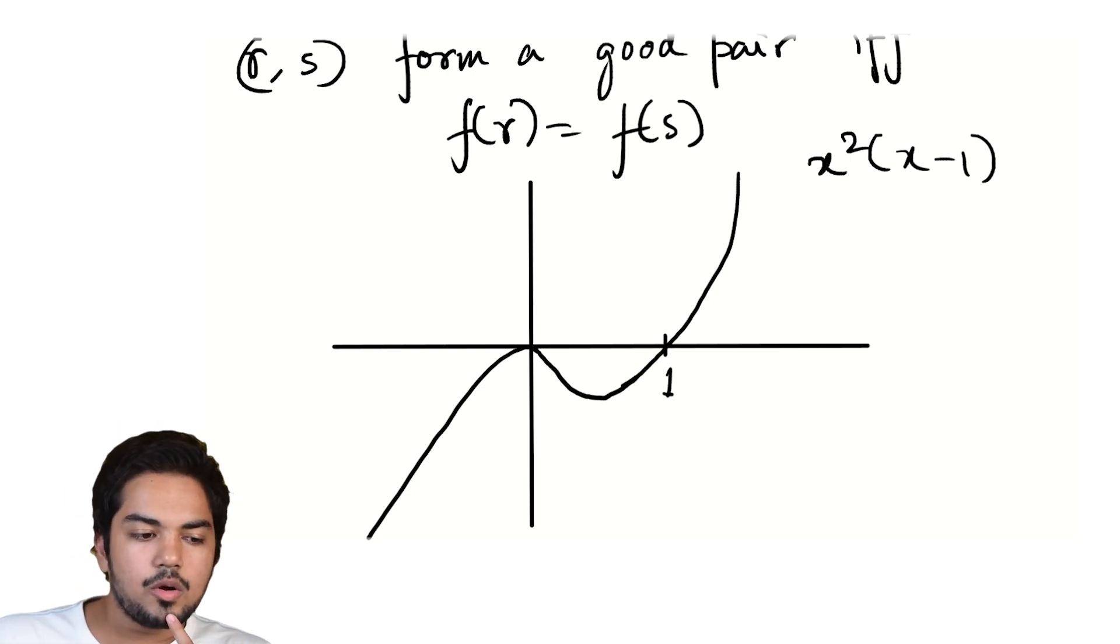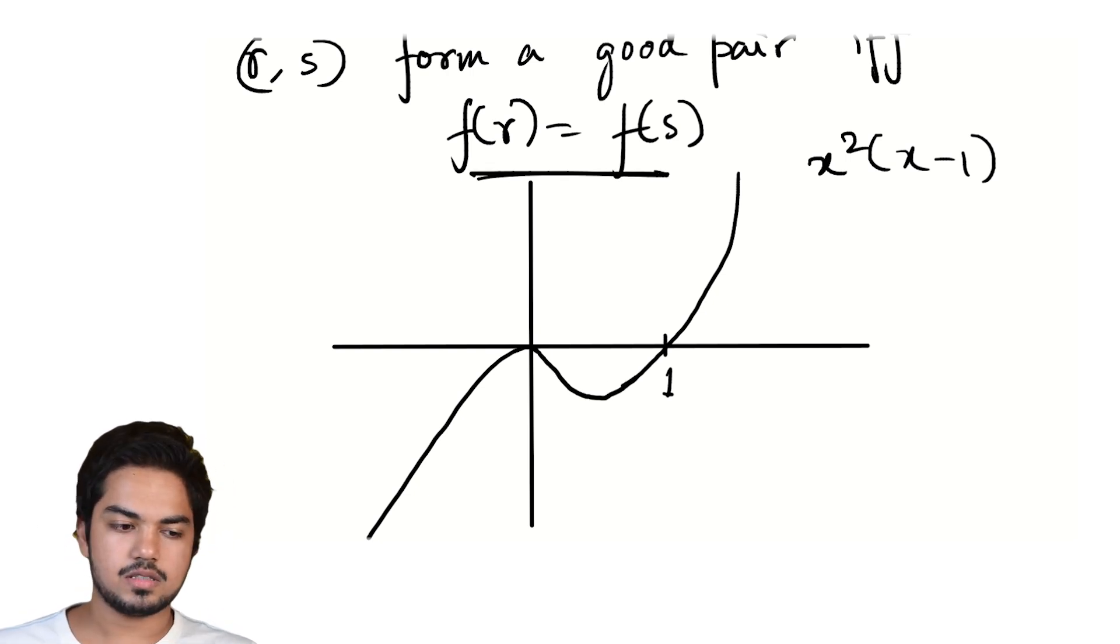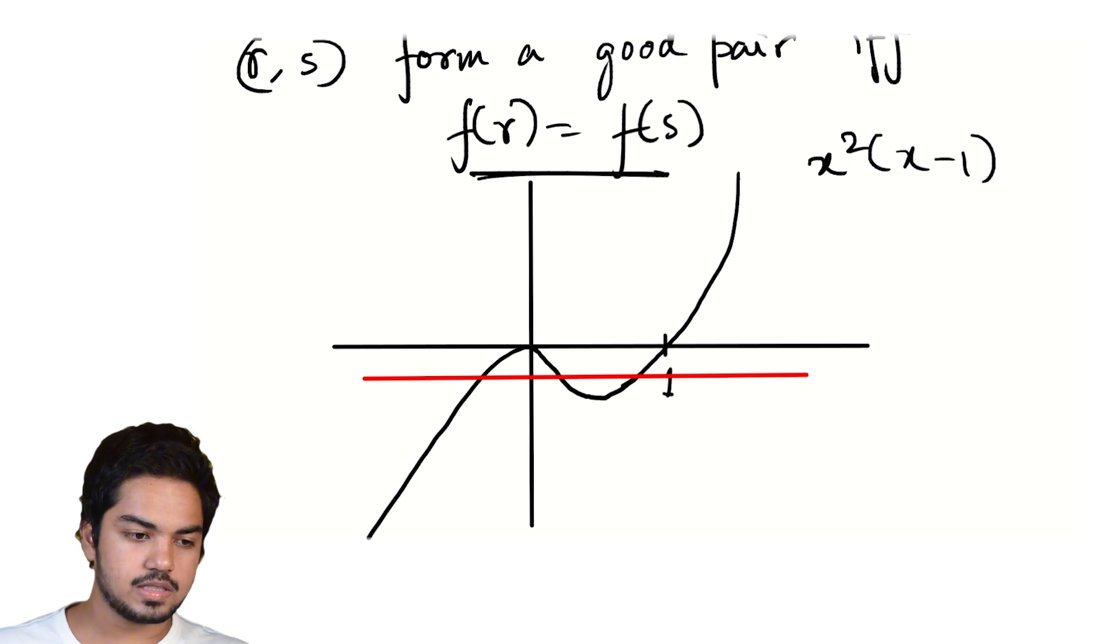And so now, how do we interpret this condition f(r) = f(s)? As usual, we interpret this by looking at intersections of a horizontal line.